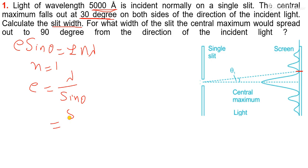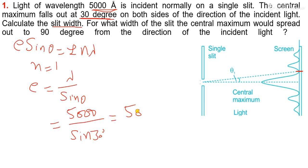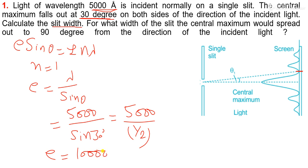Here lambda is 5000 angstrom and theta is 30 degrees, so this is sin 30 and sin 30 is 1 by 2. So 5000 upon 1 by 2. The value of slit width is 10,000 angstrom.